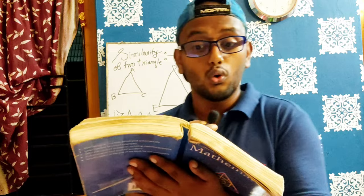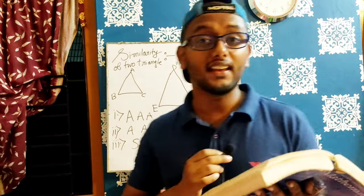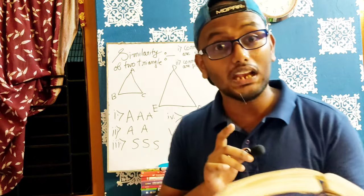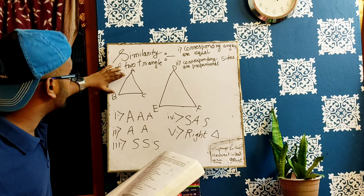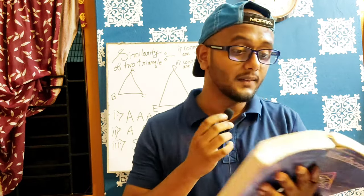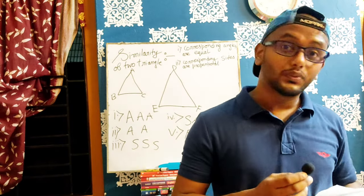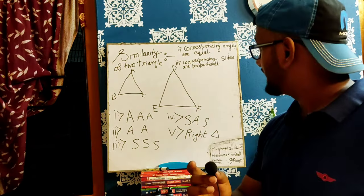For SAS similarity: one angle of the triangle is equal to one angle of the other triangle, and the sides including this angle are proportional — for example, AB over DE equals AC over DF — then the two triangles are similar.